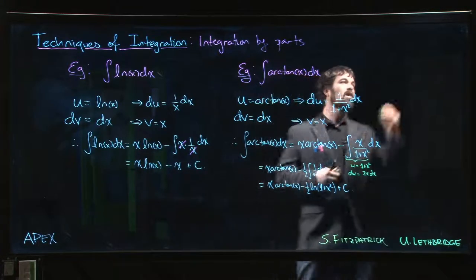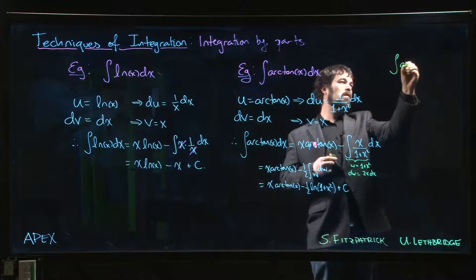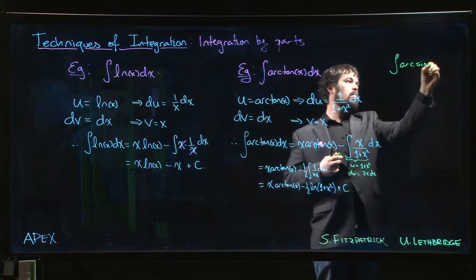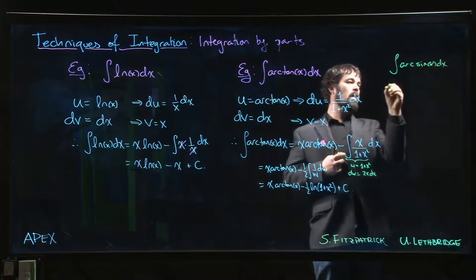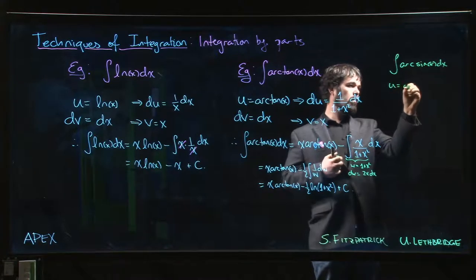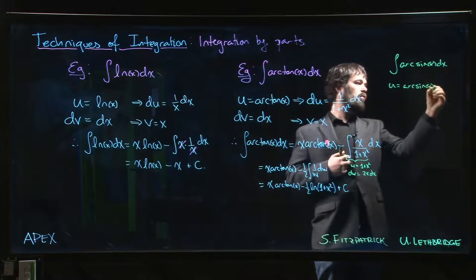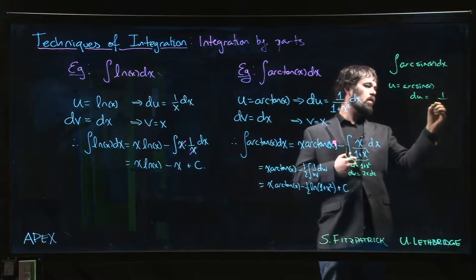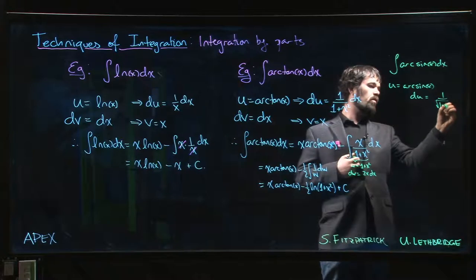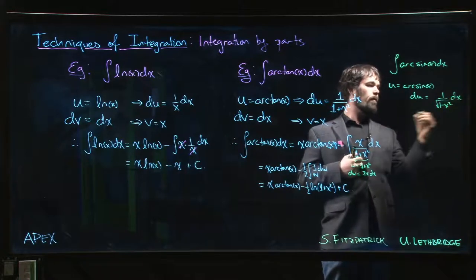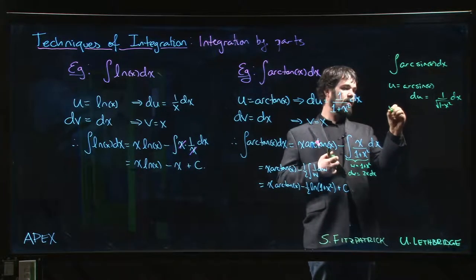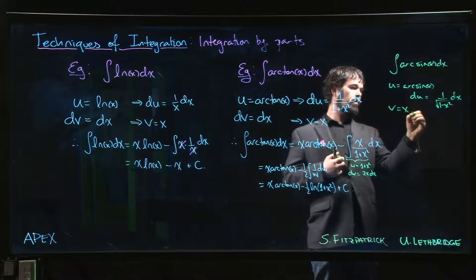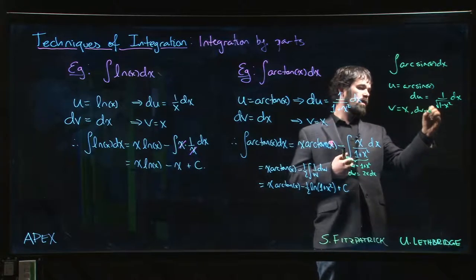If I wanted to do arc sine, I would let u equal to arc sine, so that means that du would be 1 over the square root of 1 minus x squared. And v is just going to be x with dv equal to dx.